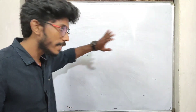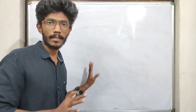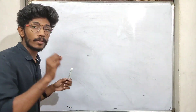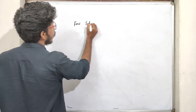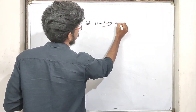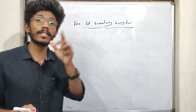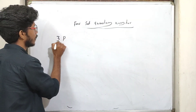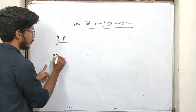Now let's look at the quantum numbers in detail. If you want to write all 4 quantum numbers, let's consider the example of a 3p electron. This is n, so n equals 3.